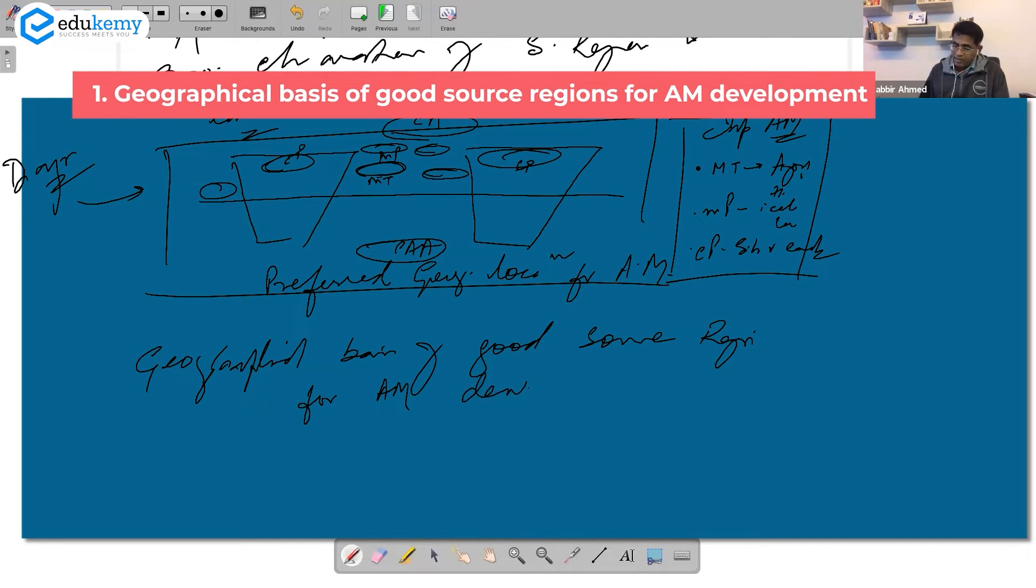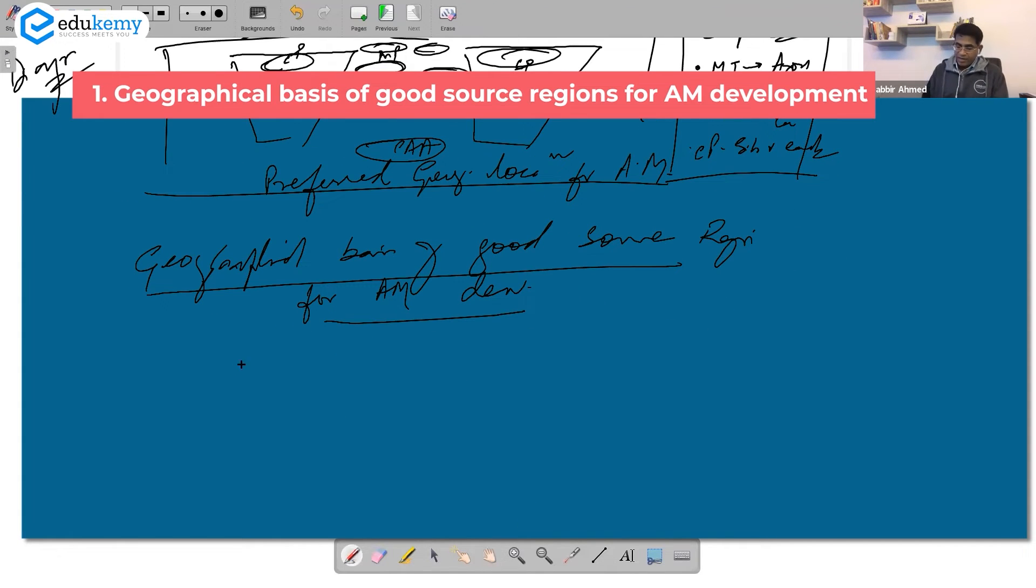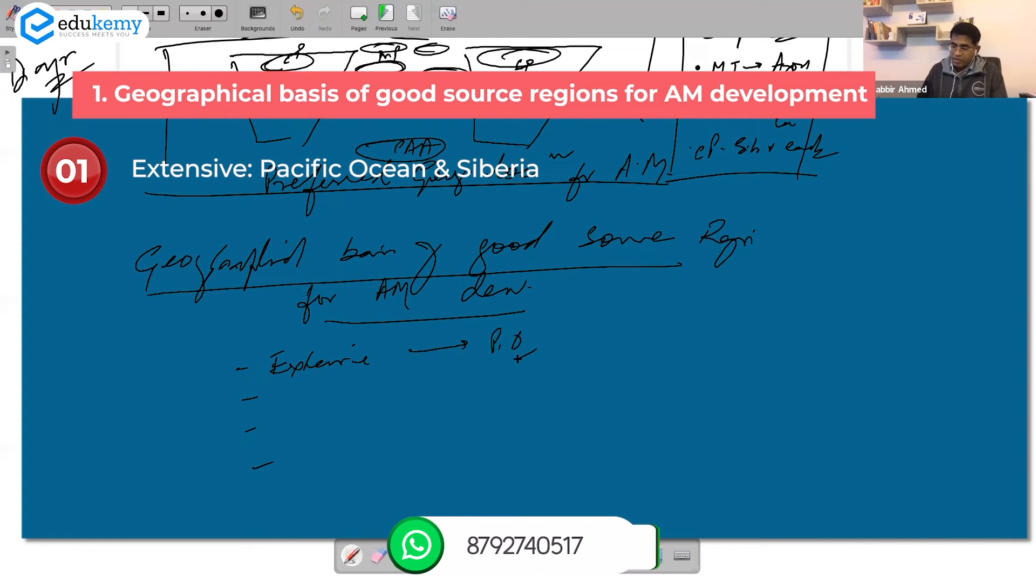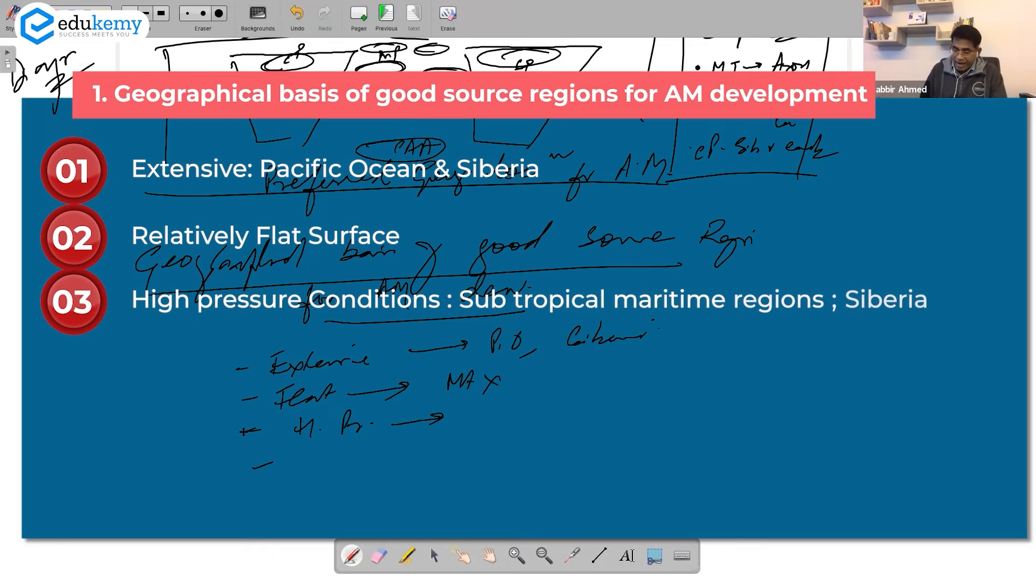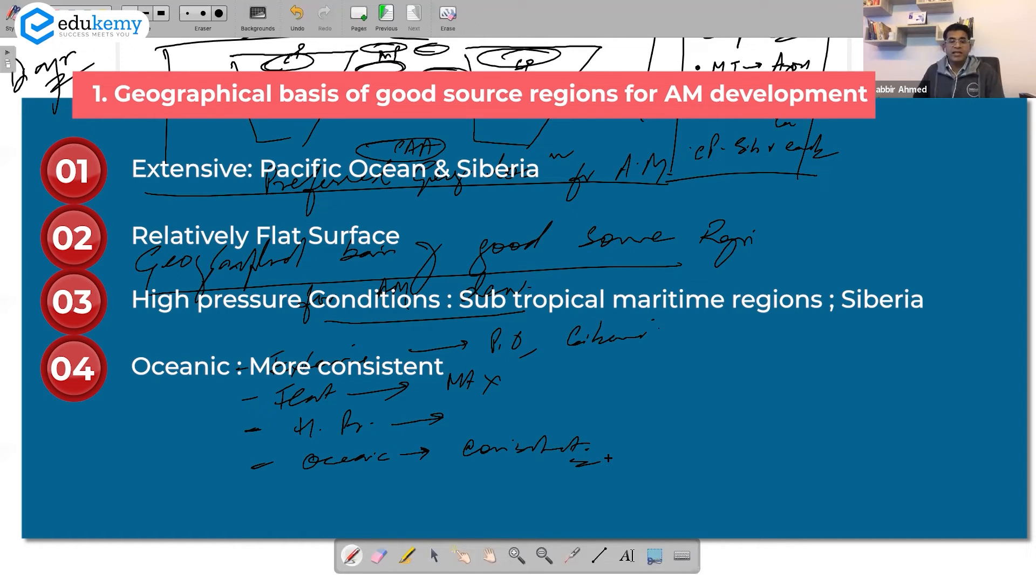For air mass development you have heading. Extensive - so talk about Pacific Ocean, talk about Siberia. It should be relatively flat, so mountainous regions... It should be an area of high pressure conditions. And the oceanic ones - these are more consistent because of their flatness, extensiveness, high pressure areas. Subtropical maritime regions and Siberia also develops high pressure. Don't just mention this - do dono line mein likhna, the geographical basis of good source regions.